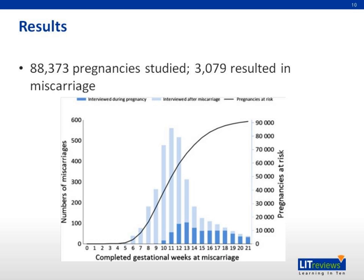Results. This graph shows the gestational age at which the interviews were done for the pregnancies. The dark blue lines are interviews done during pregnancy, whereas the light blue lines are those done after a miscarriage has occurred. As you can see from this graph, most of the interviews were done after a miscarriage had occurred.